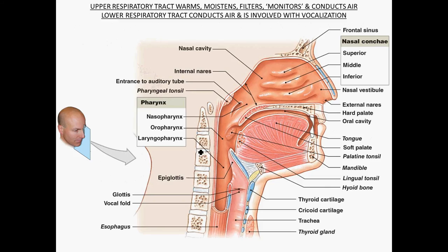In a previous screencast, we saw this mid-sagittal section through the head and dealt with the upper respiratory structures — nasal conchae, the pharynx, etc. — getting air down to the laryngopharynx. From the laryngopharynx, air moves into the main airway, the trachea. This opening from the laryngopharynx down to the trachea is called the glottis. There is a very prominent piece of cartilage here known as the epiglottis.